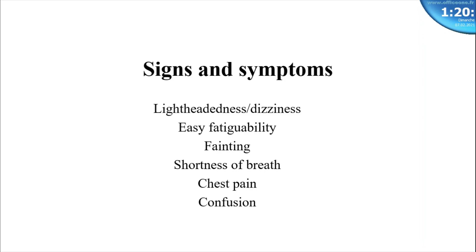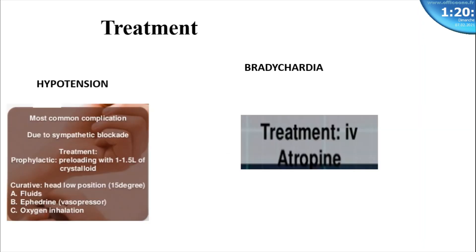The signs and symptoms of bradycardia include lightheadedness, dizziness, easy fatigability, fainting, shortness of breath, chest pain, and confusion. Management of hypotension — the most common complication due to sympathetic blockade — includes prophylactic preload with 1 to 1.5 liters of crystalloid. Curatively, place the patient in a head-low position at 15 degrees, give fluids, ephedrine or phenylephrine, and oxygen inhalation. For bradycardia, please give IV atropine as the drug of choice.